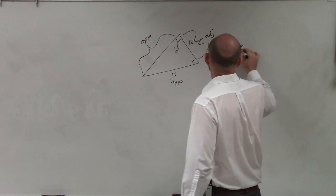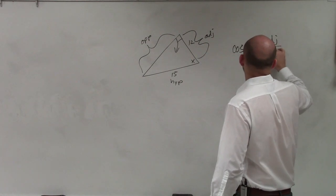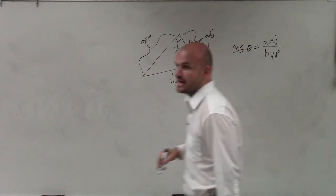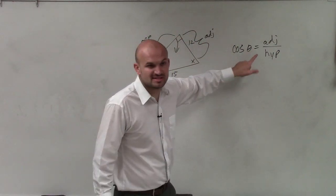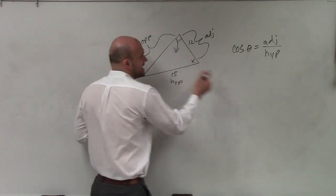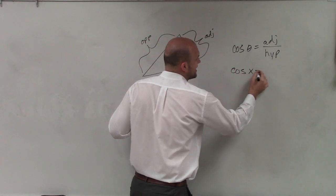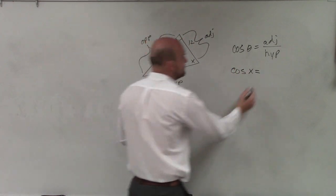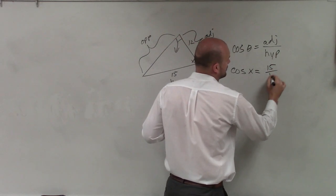So I'm going to say cosine of theta equals adjacent over hypotenuse. Now, remember theta represents our angle, right? Our angle is x. So I say cosine of x equals my adjacent side, which is 15, over 12.